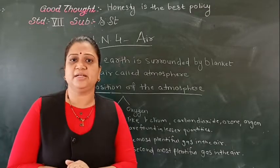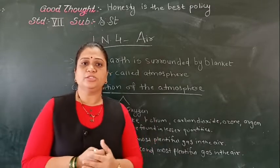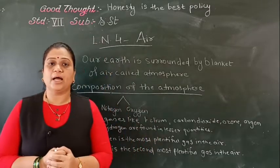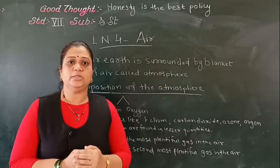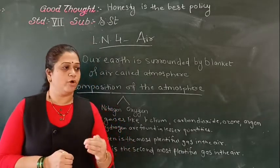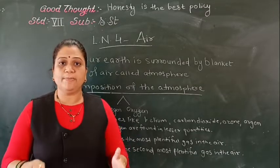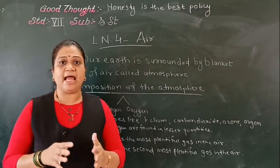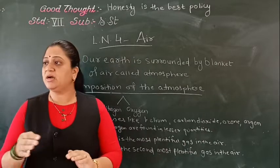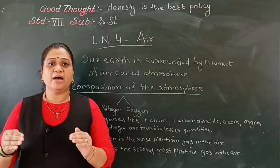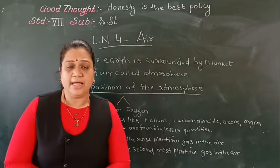So we say that deforestation should be stopped, because plants produce oxygen which is very important for human beings and animals. We have to stop deforestation because when we cut trees we are disturbing the oxygen level in the atmosphere.